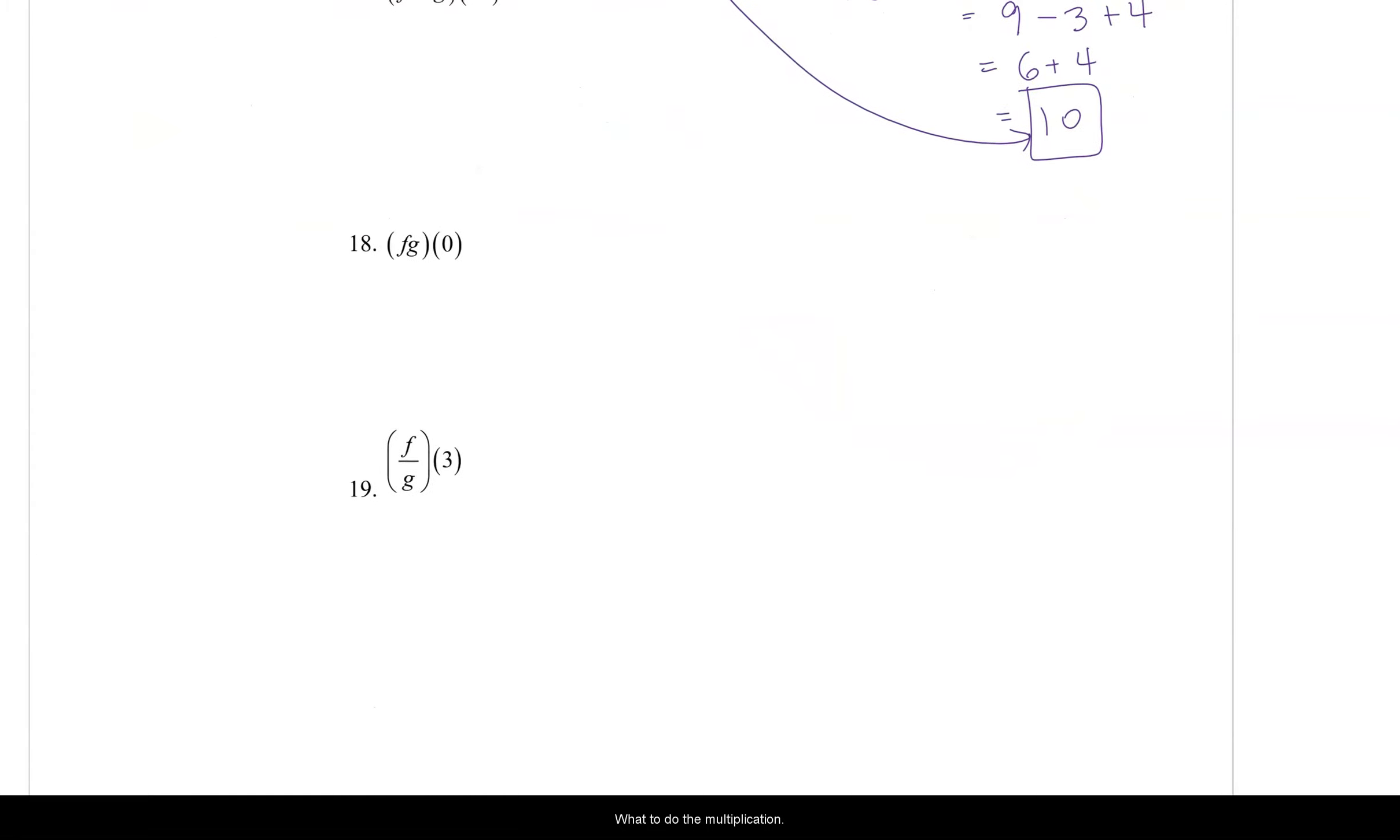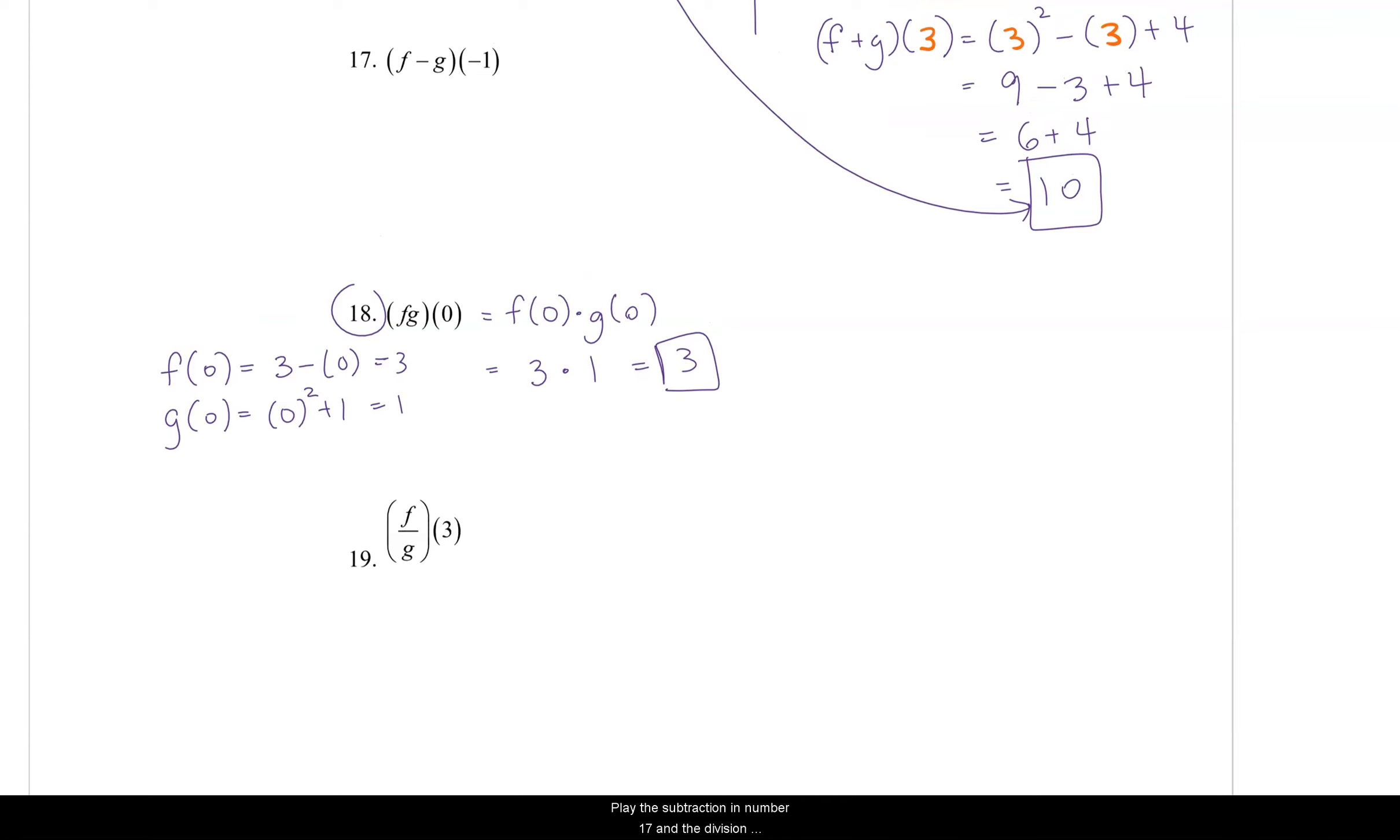Let's do the multiplication. f times g of 0. f(0) times g(0). In doing this, f(0), 3 minus 0 would give us 3. g(0), 0 squared plus 1 would be 1. And if we multiply them together, 3 times 1 gives us 3. Try the subtraction in number 17 and the division in number 19 on your own. And see if you can come up with the answers that will be in the one note.